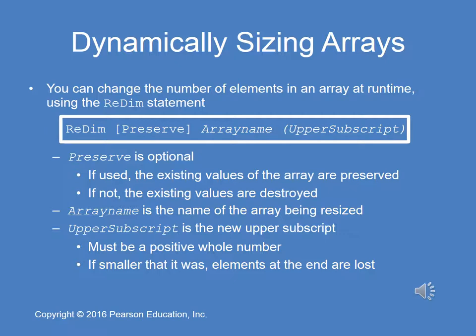If preserve is included, the existing values in the array are preserved. If not, all the existing values are destroyed and the array is resized. The upper subscript becomes the new upper subscript number and must be a positive whole number. If smaller than it was, elements at the end of the array are lost — even if you use preserve. Even preserve does not preserve values if you try to resize the array to a smaller number of indexed elements.